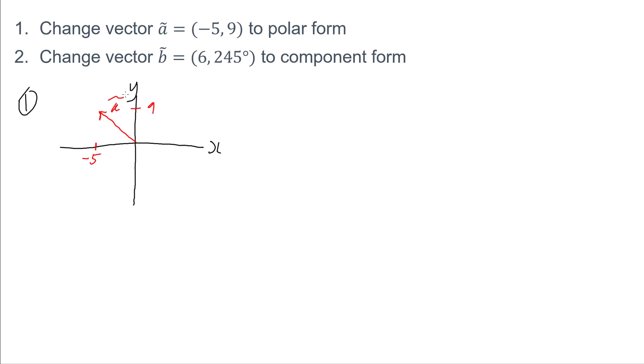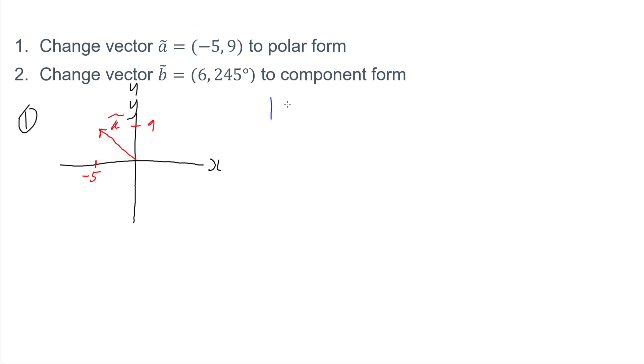And I want to find out what this is in polar form. Now for polar form, I need to find two things. I need to find the magnitude of A, so I need to know how long A is. And I need to know the angle that A makes with the positive x axis.